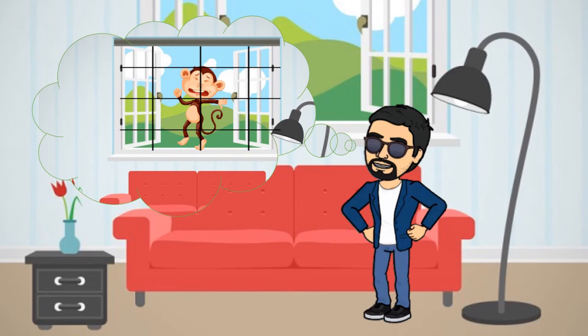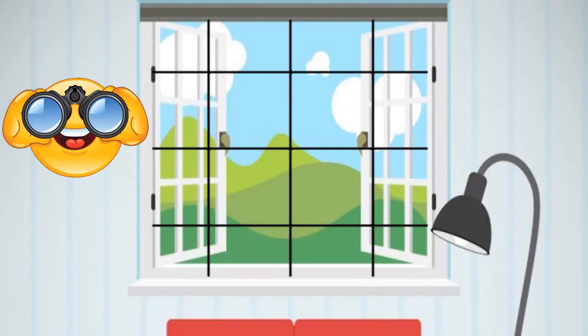Students, now you all think and tell me which is the best solution Rohan could use. Yes, very good students — what a correct choice you made! The best solution to this problem is putting a net on the window so that the monkey doesn't enter inside the house. Now that we have solved Rohan's problem, let us have a close look at the net he is going to use.